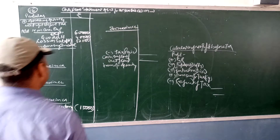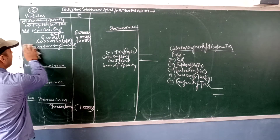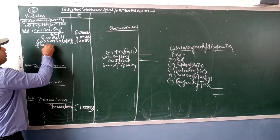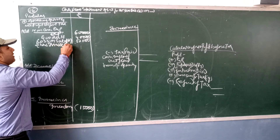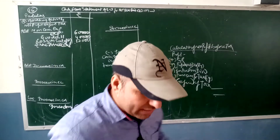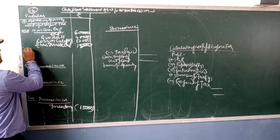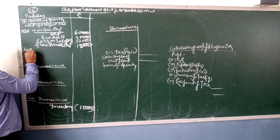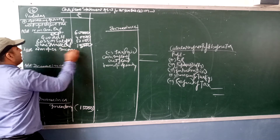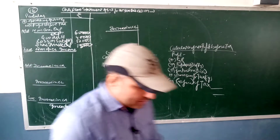Share issue expenses are also added here. Now we will talk about less non-operating income. What does the non-operating income include? We need to check what falls under non-operating income and subtract it from the total.